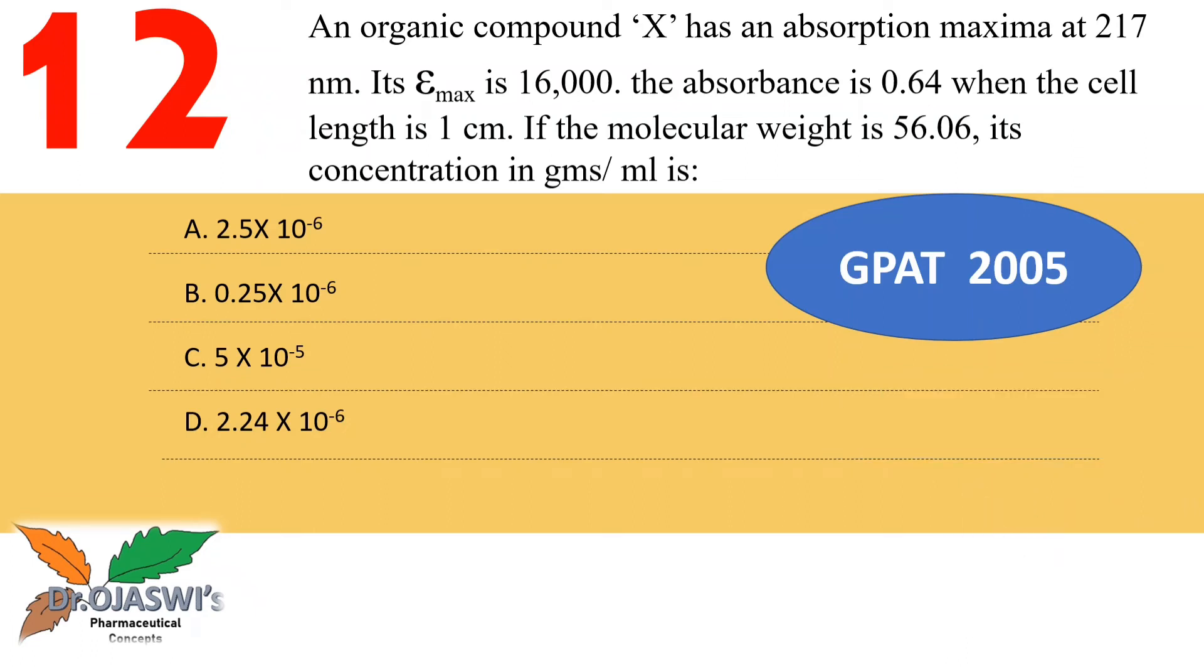An organic compound X has an absorption maxima at lambda max 217 nanometers. Its molar absorptivity is 16,000, absorbance is 0.64, cell length is 1 centimeter, and the molecular weight is 56.06. We have to find out the concentration in terms of grams per ml.